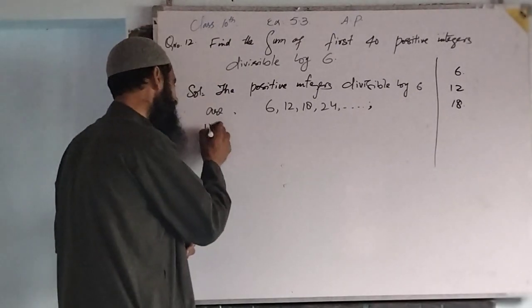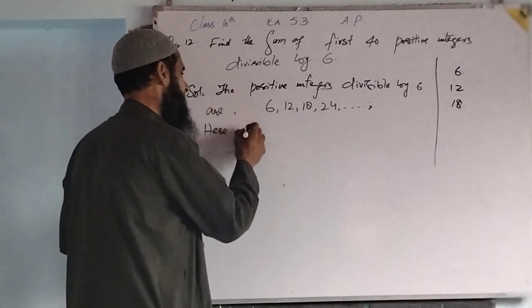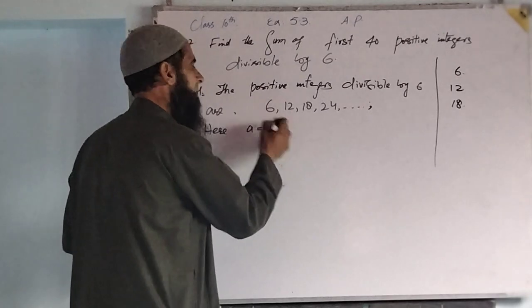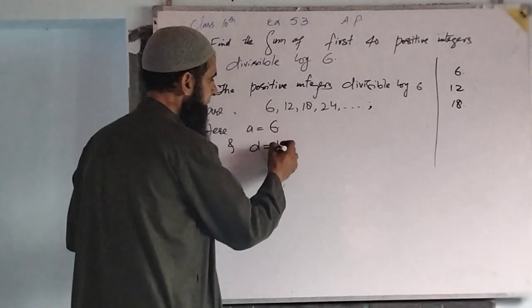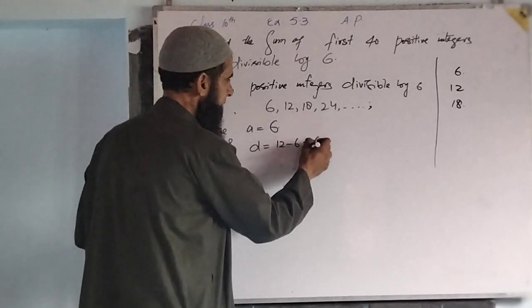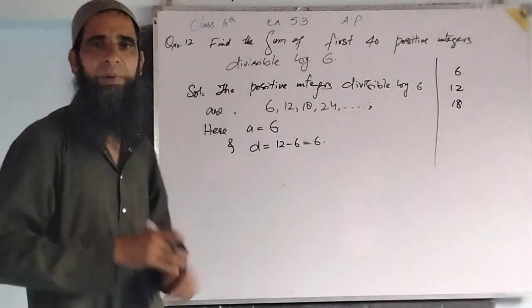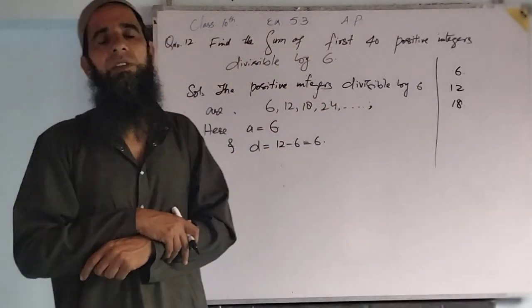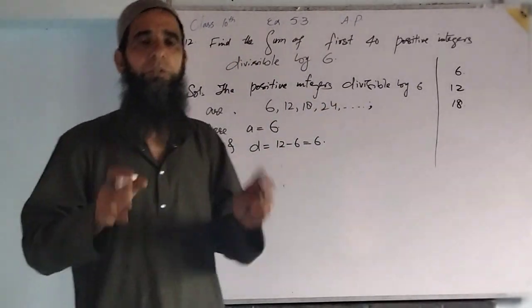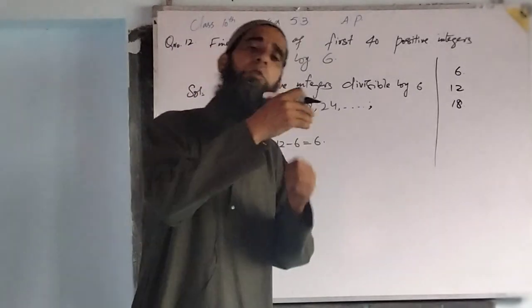Here a is equal to 6, and d is equal to 12 minus 6 that is equal to 6. Both first term as well as common difference of this arithmetic progression is 6. We have to find sum of first 40 terms.